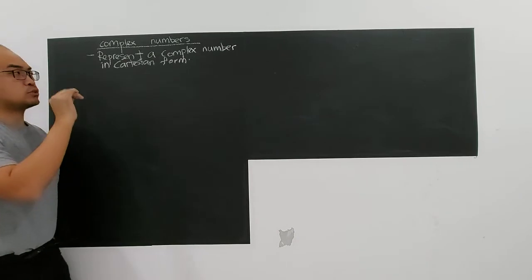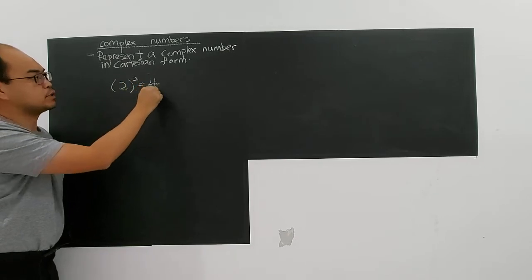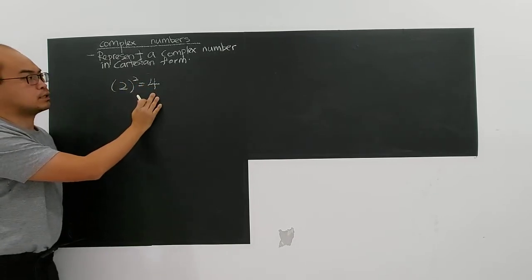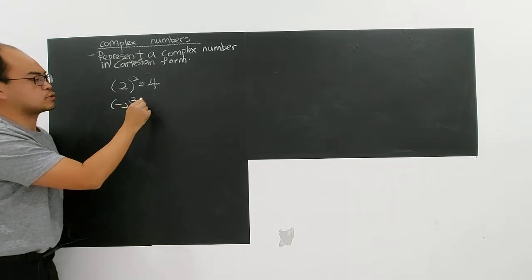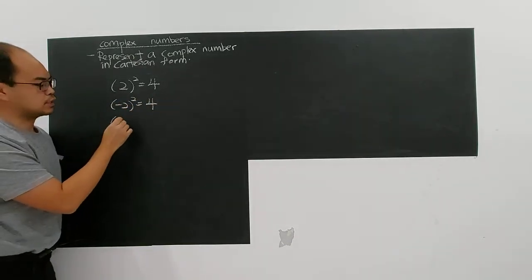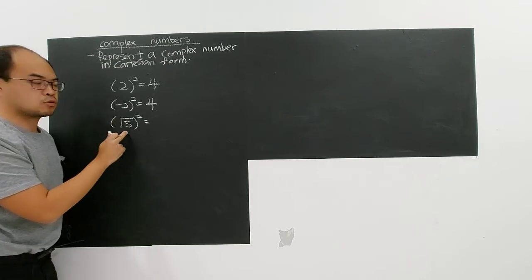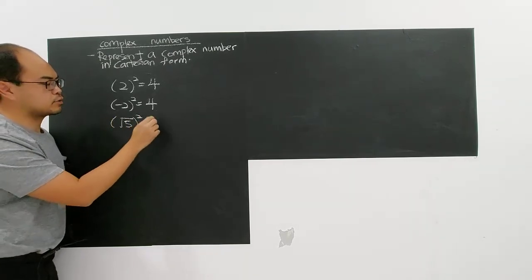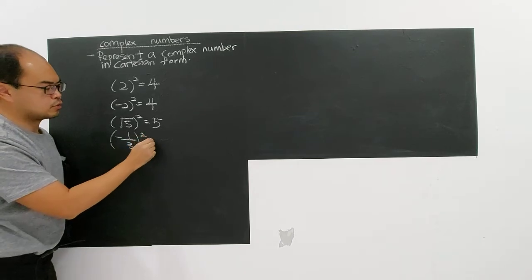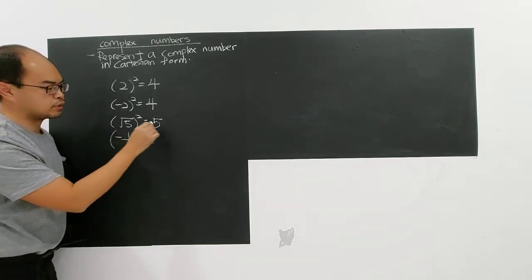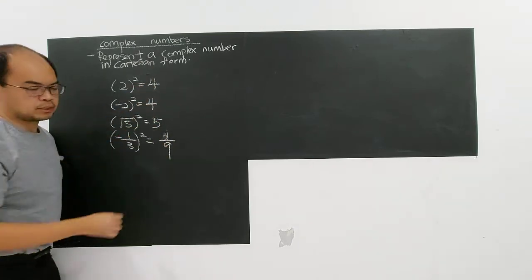You must know that the square of any real number will produce a positive number. For example, even negative 2, if you square, you will still produce 4. Or square root of 5 — that is also a real number — if you square, you will get 5. Or a fraction like negative 1 over 3, if you square, you will get 1 over 9. All real numbers, whether positive or negative, when you square, you will get a positive number.